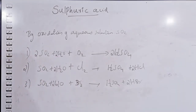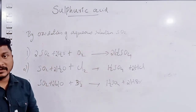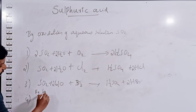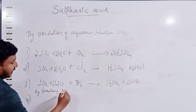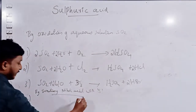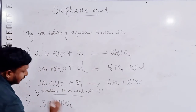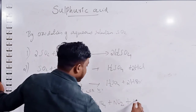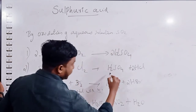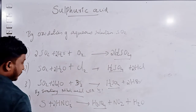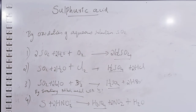One more method to prepare sulfuric acid is by treating nitric acid with sulfur. You may have already studied this reaction in the nitric acid chapter. The reaction is: S + HNO₃ → H₂SO₄ + NO₂ + H₂O. We balance by putting 2 in front of appropriate terms. H₂SO₄ is formed in this reaction as well.